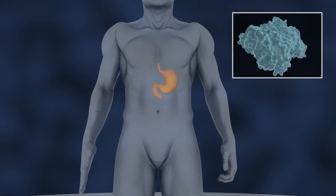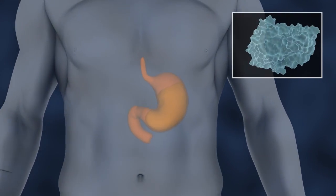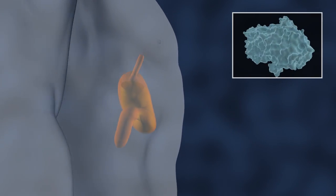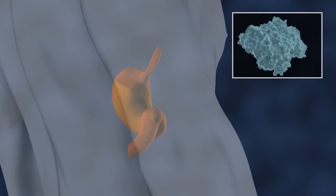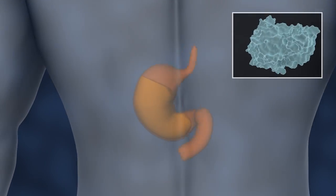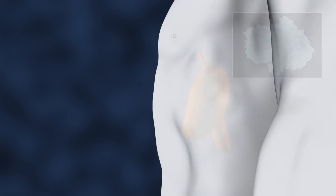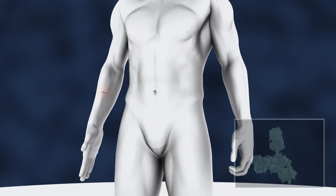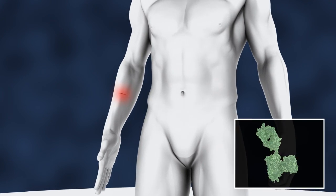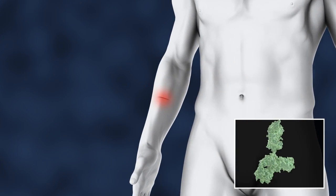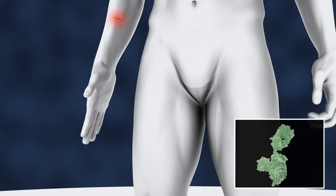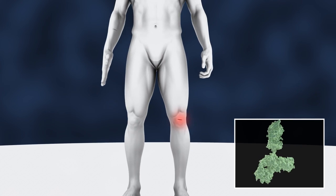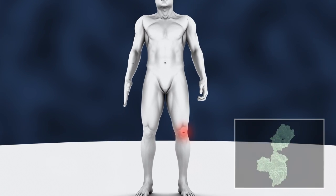Special types of protein called enzymes allow us to break down the carbohydrates in our food so that we can have the energy to live. Other types of protein can recognize disease organisms that enter our bodies so that our immune system can fight them and keep us healthy.